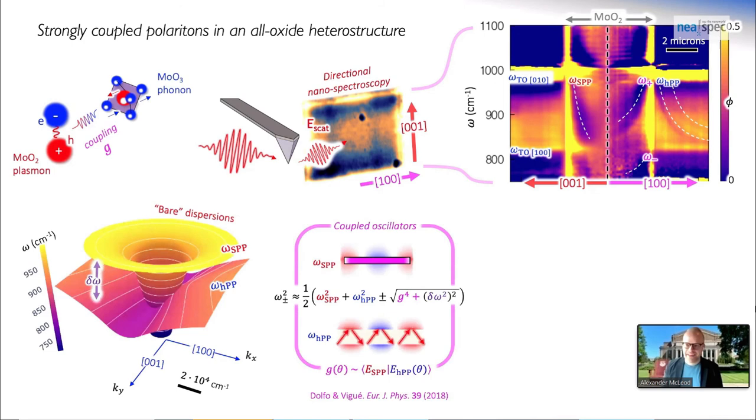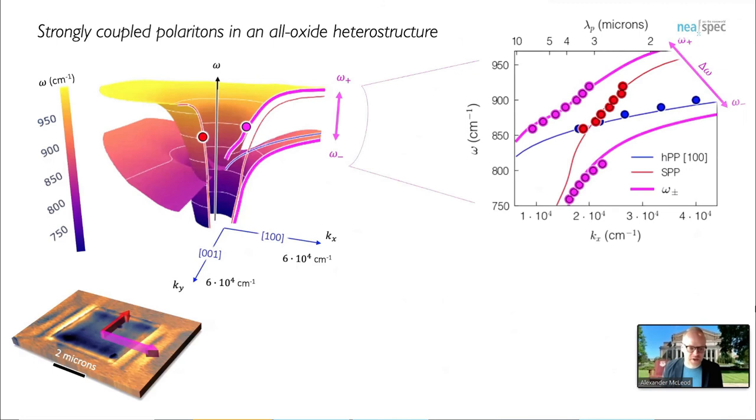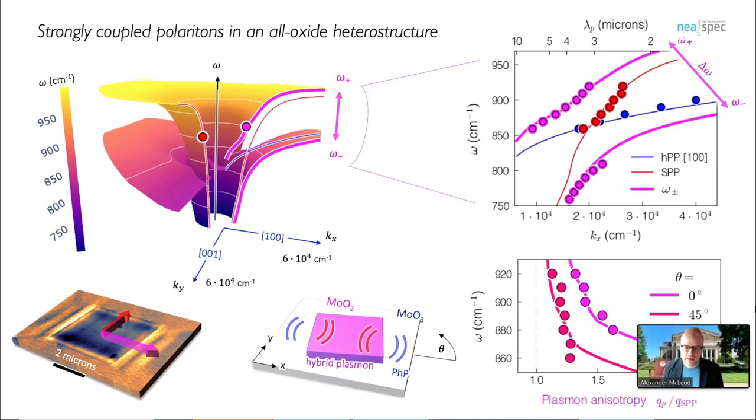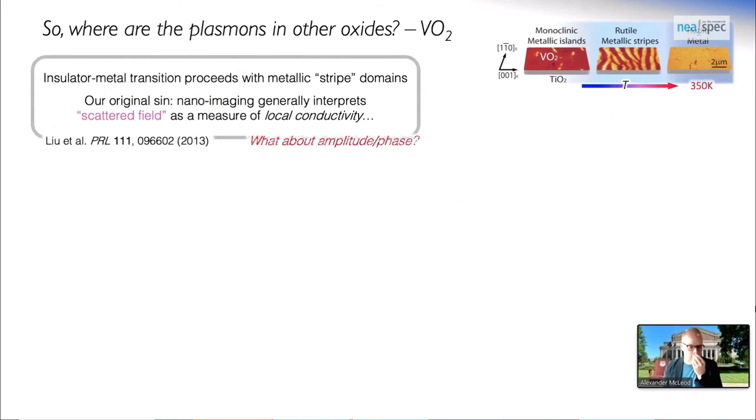What we can actually do is map the dispersion of these hybrid polaritons, and from our nano FTIR results, go ahead and put our data points there. We can see we have a very strong Rabi splitting between these two modes. It means to say that plasmon polaritons in oxides can be just as evocative as the plasmon polaritons that we're more accustomed to in graphene.